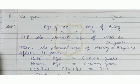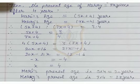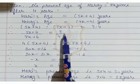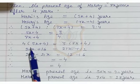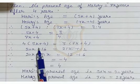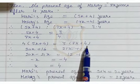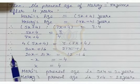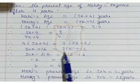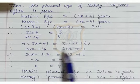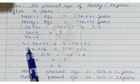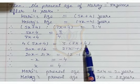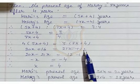So we write: 5x plus 4 upon 7x plus 4 is equal to 3 upon 4. Using cross multiplication: 4 times (5x plus 4) equals 3 times (7x plus 4). Now we open the brackets. Therefore 20x plus 16 equals 21x plus 12. We multiplied 4 by 5x and 4 by 4, and 3 by 7x and 3 by 4. Now we will use the transposition method.